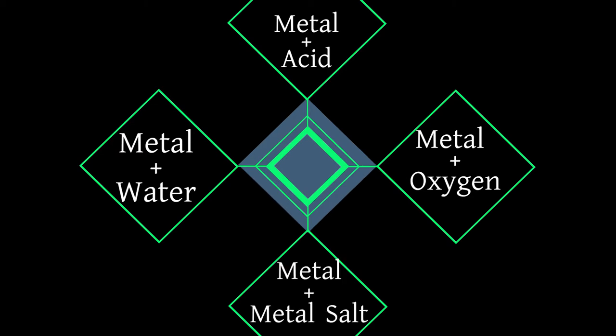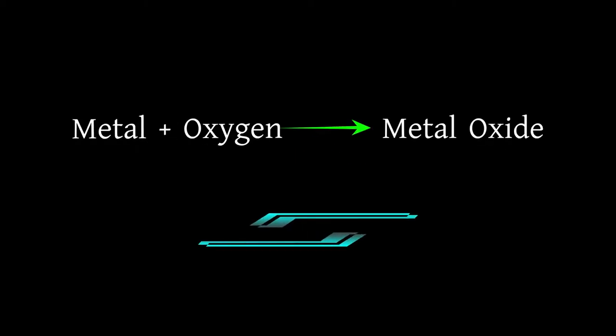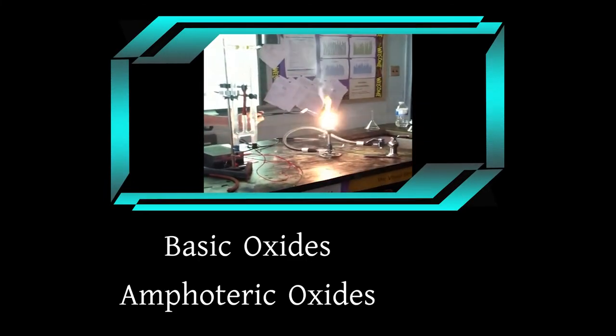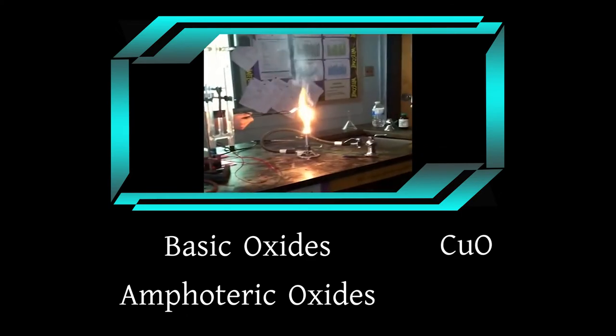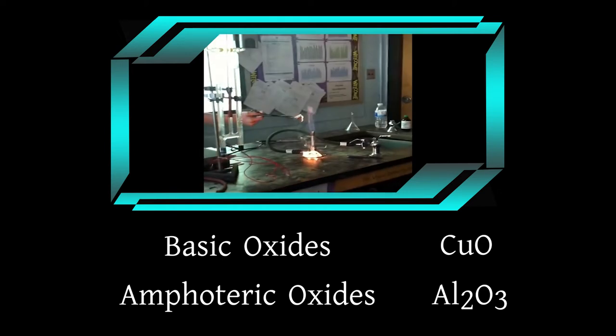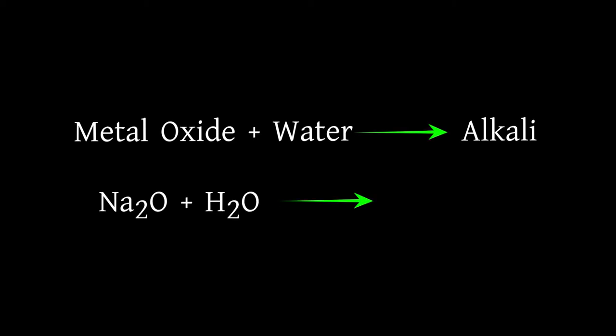Metals combine with oxygen to form metal oxides. These metal oxides are either basic or amphoteric in nature. Basic oxides like copper oxide and amphoteric oxides like aluminum oxide. Soluble oxides are dissolved in water to form alkalis. For example, sodium oxide dissolves in water to form sodium hydroxide.